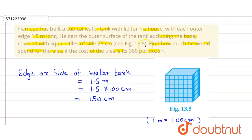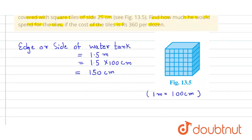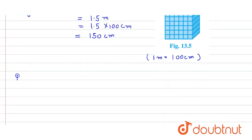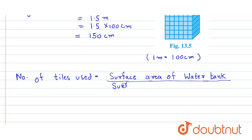So here first we have to find out the number of tiles used in this tank. The number of tiles used equals the surface area of water tank divided by surface area of one tile.